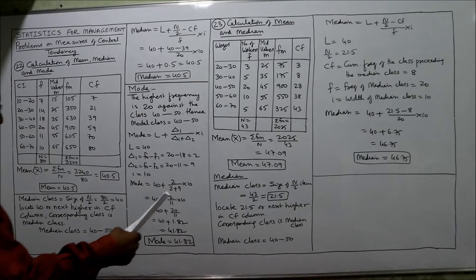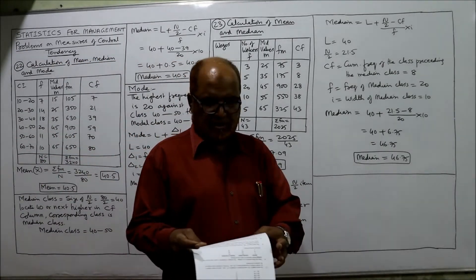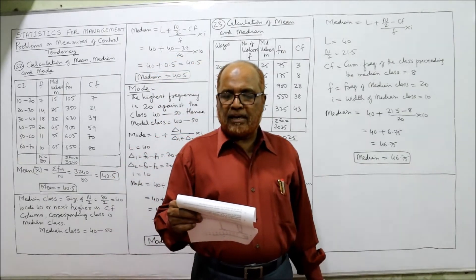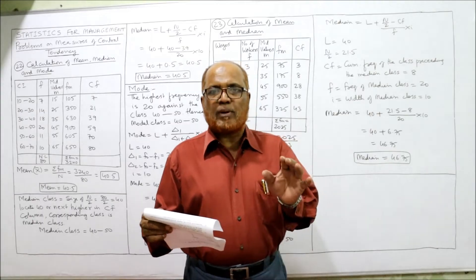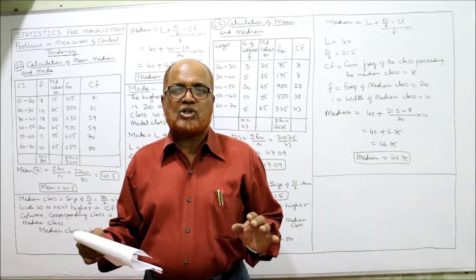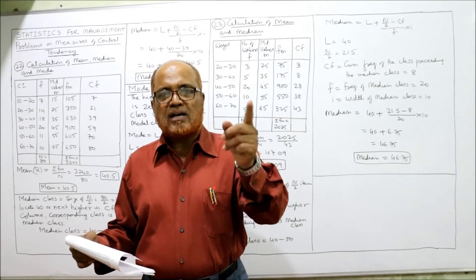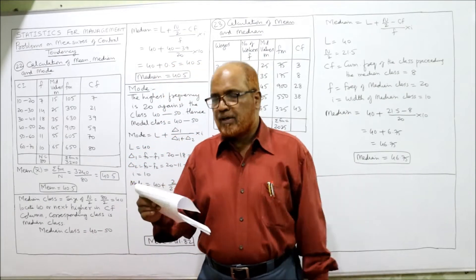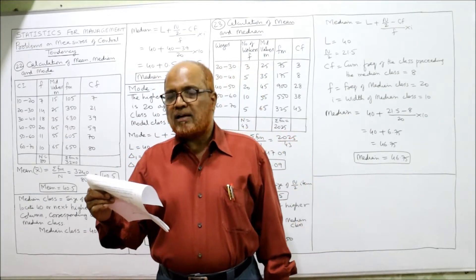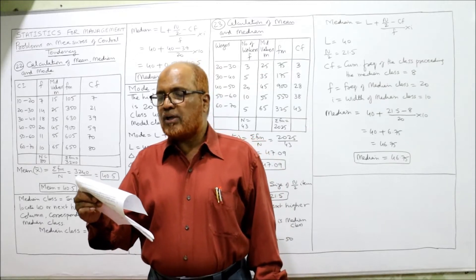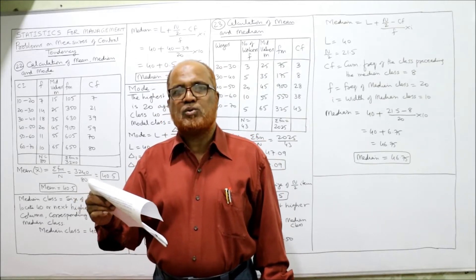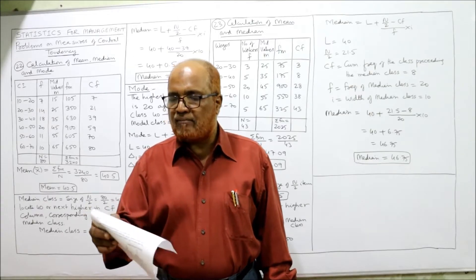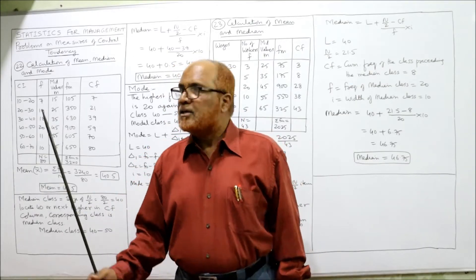See the twenty-second problem: from the following data, calculate mean, median, and mode. This type of problem will be frequently asked in examinations — in one problem itself it asks for mean, median, as well as mode. The class intervals are 10–20, 20–30, 30–40, 40–50, 50–60, and 60–70, and the frequencies given are 7, 14, 18, 20, 11, and 10.